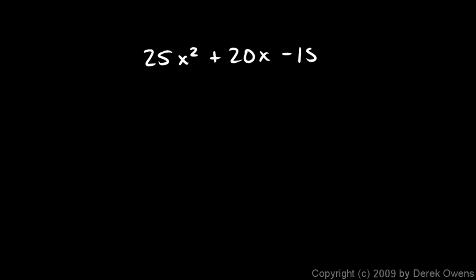Next example: 25x² + 20x - 15. There's an x squared here and an x here, but there's no variable in the last term, so I can't factor a variable out of every single term. I need to find a factor common to all three numbers. Looking at 25, 20, and 15, you can see that would be 5. So let's factor out a 5. What do we need to multiply 5 by to give us 25x squared? That would be 5x squared.